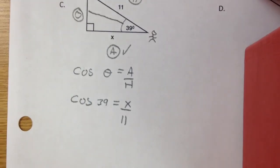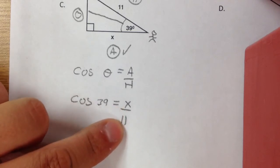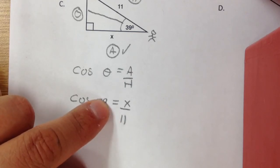The goal here is to get X by itself. You've got this divide by 11 here, so to get X by itself, all you've got to do is bring the 11 up to the other side, and it will multiply on the other side.